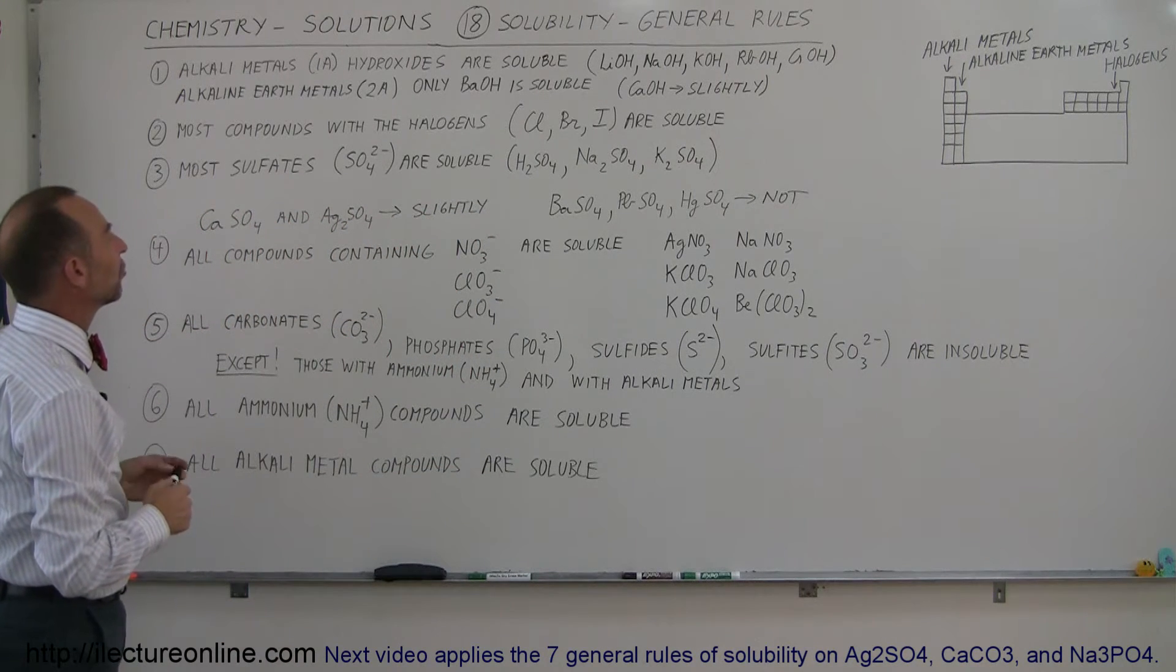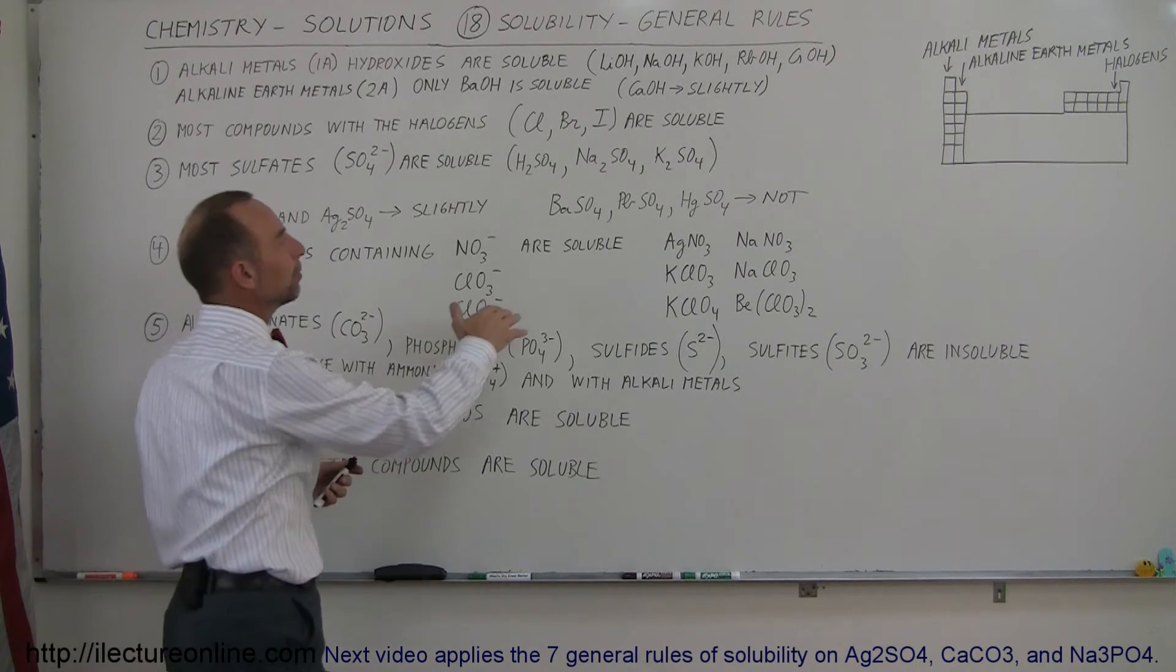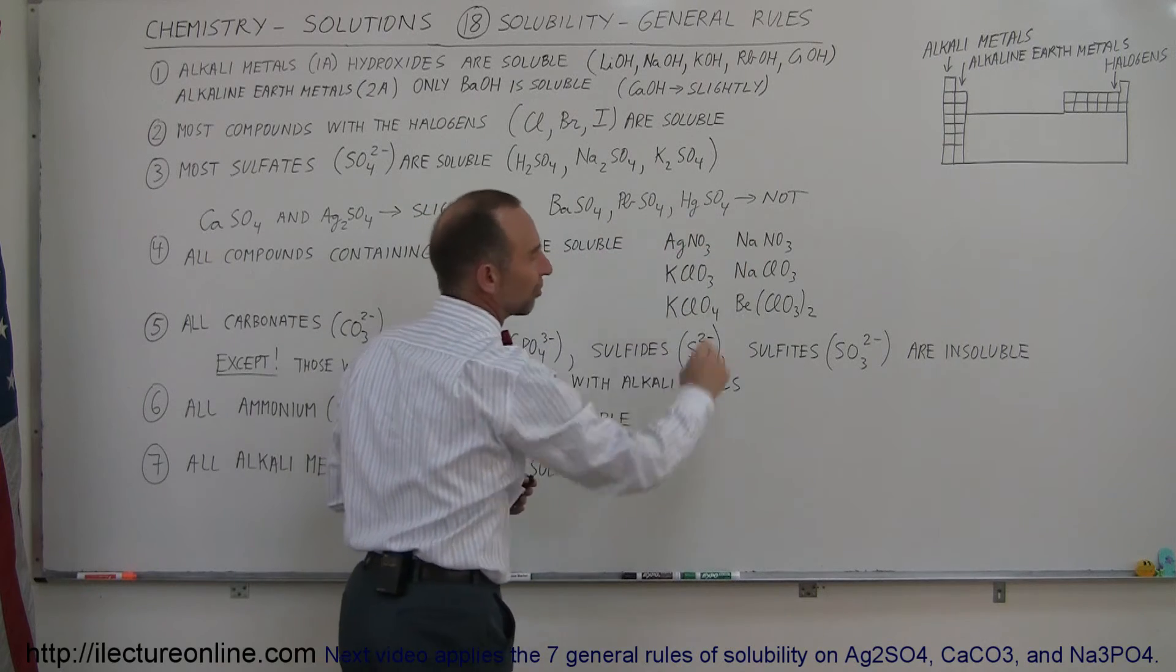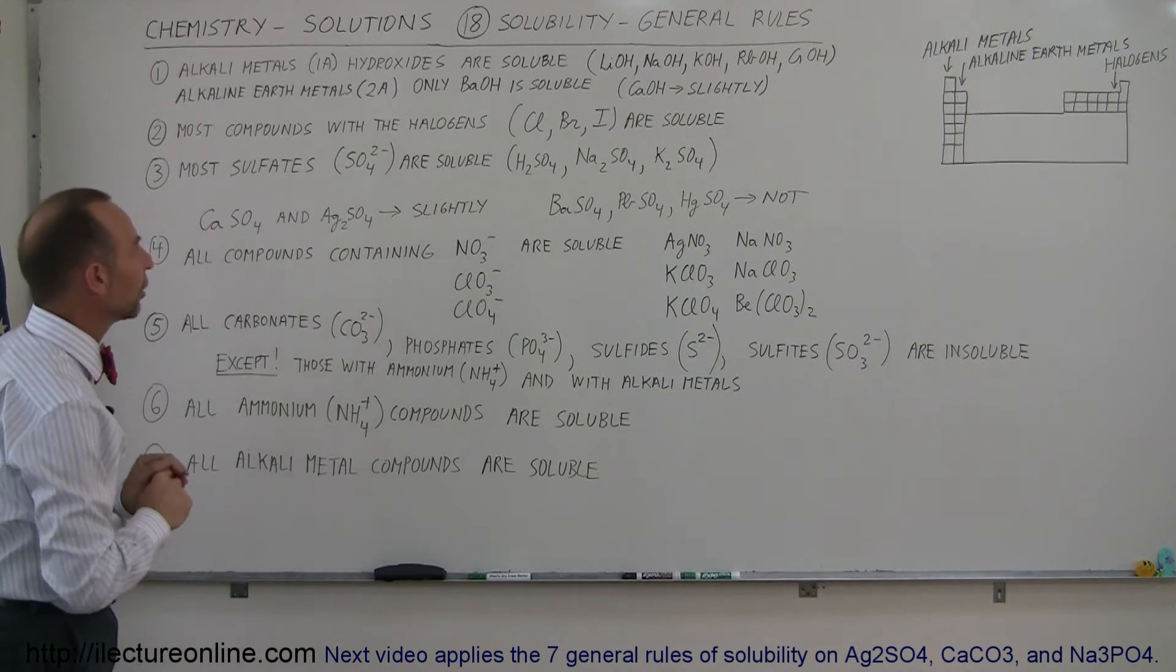Calcium sulfate and silver sulfate are slightly soluble. When it gets to barium, lead, and mercury sulfate, they are not soluble. So, there's a difference here. You have to understand when they're soluble and when they're not.